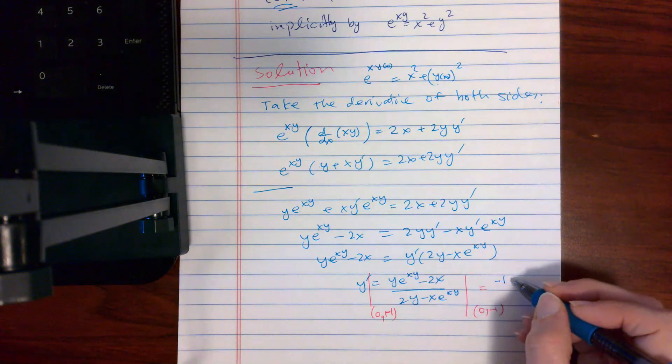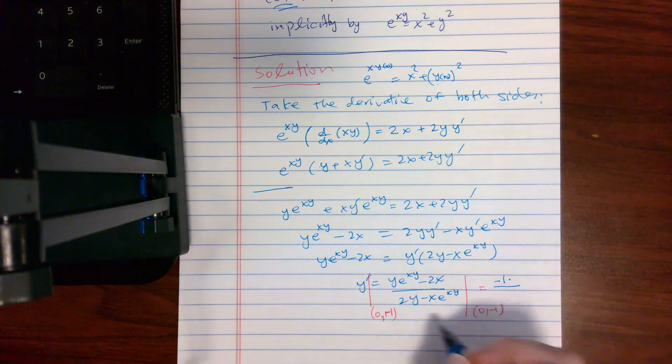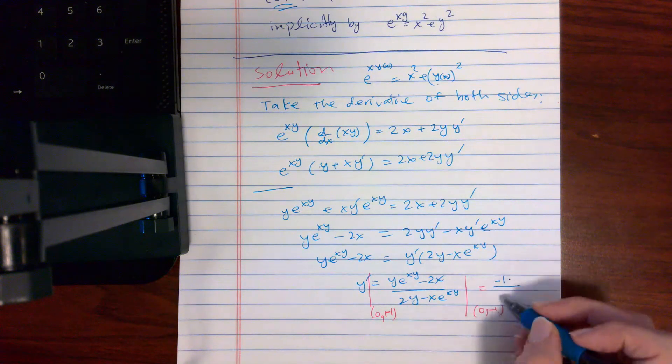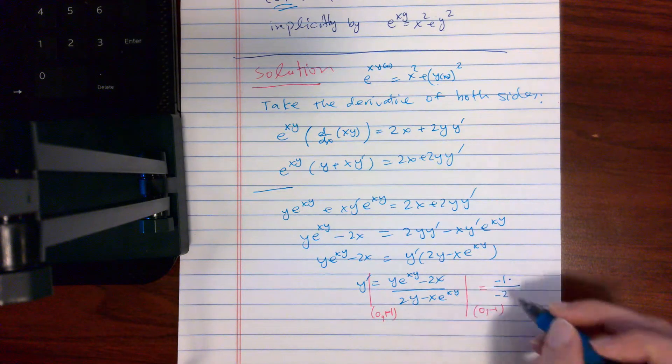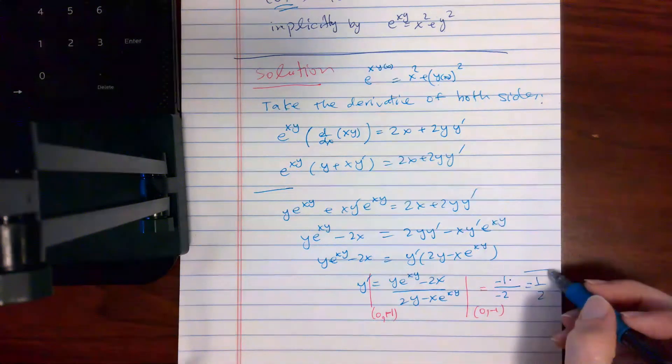And divide it by 2 times negative 1 is negative 2 minus 0, and you get 1/2. So the slope is 1/2.